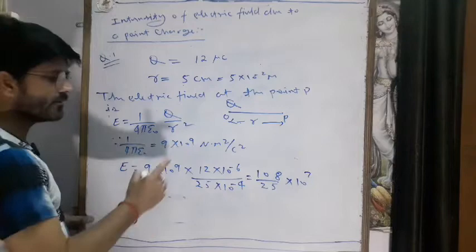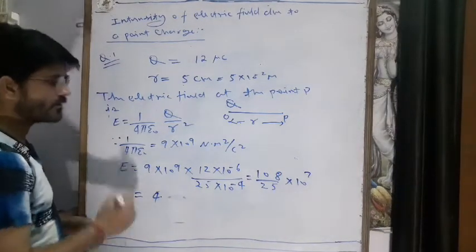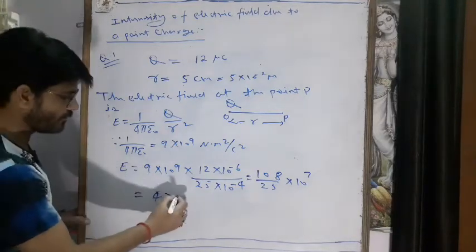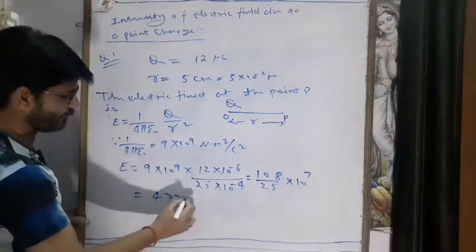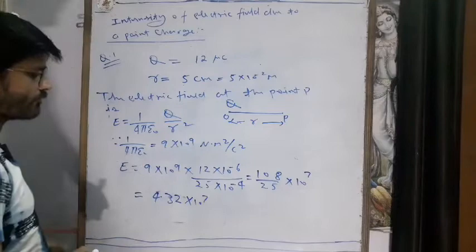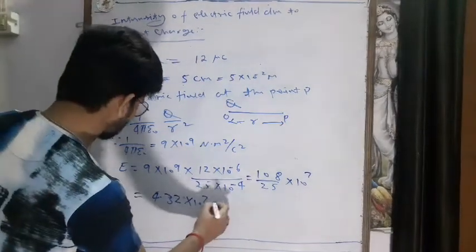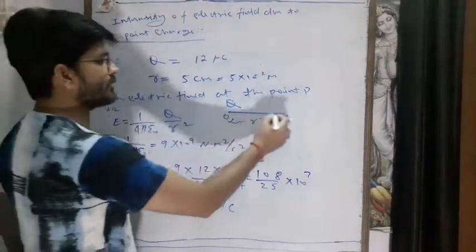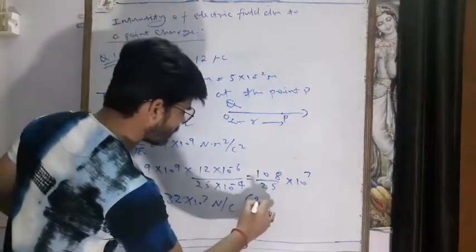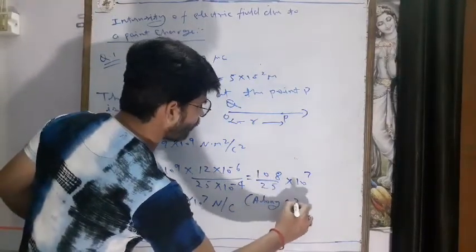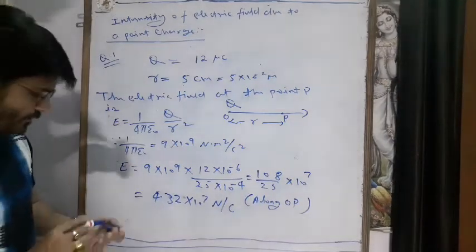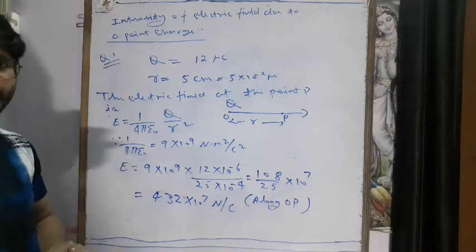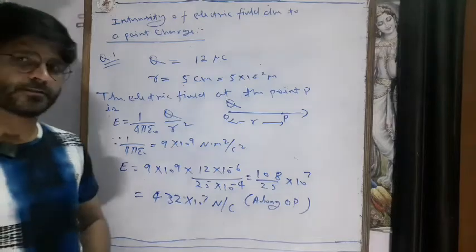After the division, 108 divided by 25 gives 4.32. So the electric field at point P is 4.32 × 10⁷ Newton per coulomb. Since the charge is positive, the direction is outward from the charge along O to P. That's all for today. In the next class we will discuss the next topic. Goodbye, bye bye.